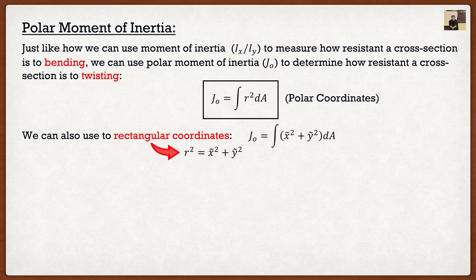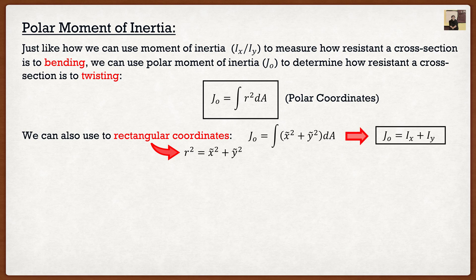And we basically have two different integrals. The first one is x squared dA, which is the moments of inertia about the y axis. And then the second one is y squared dA, which is the moments of inertia about the x axis. So if you want to, you can just add them together to find the polar moments of inertia.